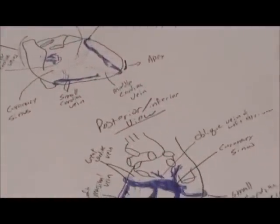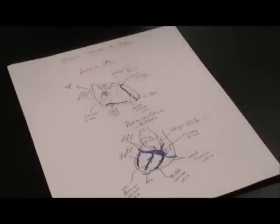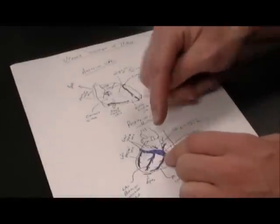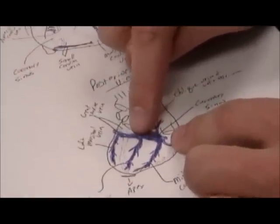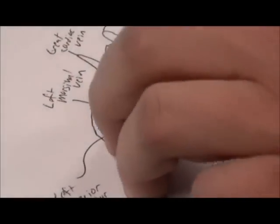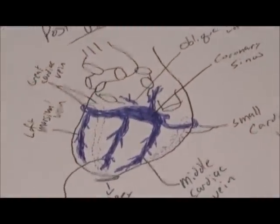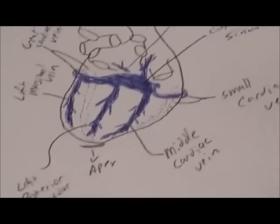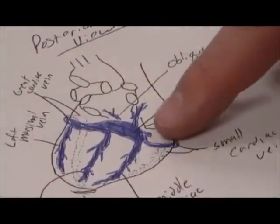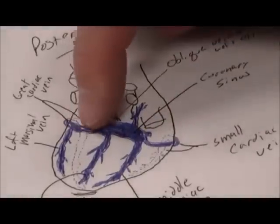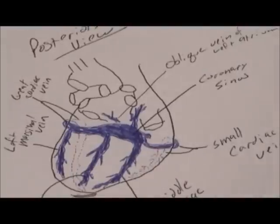Now let's move to the venous drainage of the heart. Starting from the posterior inferior view, where there is more traffic regarding the veins. The major vein is quite large — it's called the coronary sinus, about an inch in length. It is found traveling along the inferior aspect of the right atrium and wraps almost all the way around to where the circumflex artery would be traveling on the left side. It's a widely dilated vessel because most of the cardiac veins drain into it, and the coronary sinus meets up with the right atrium so poorly oxygenated blood is drained back in to pick up more oxygen.